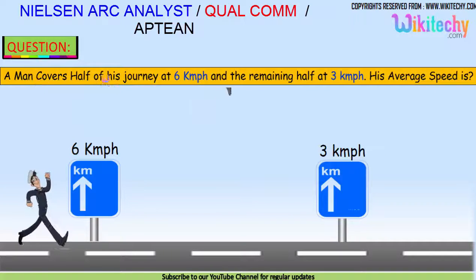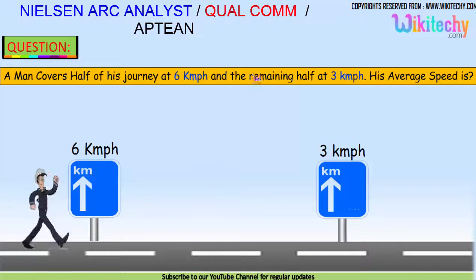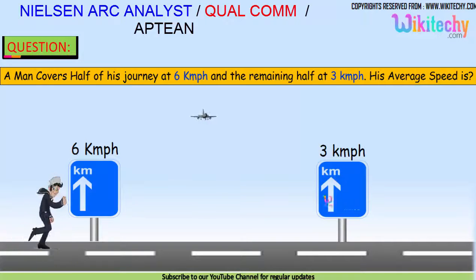A man covers half of his journey at 6 km per hour and the remaining half at 3 km per hour. What is his average speed?